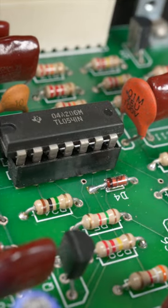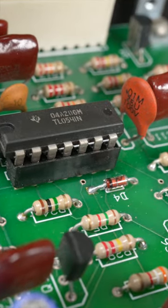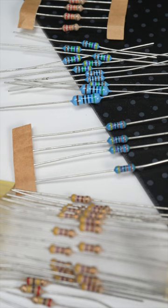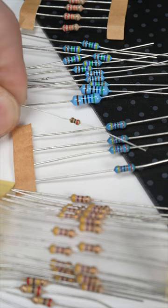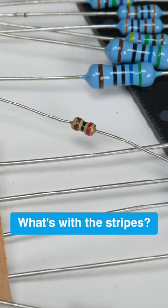Through-hole resistors are so commonplace that you likely don't notice their unusual aesthetic. So why are they the only component that displays its value using painted stripes?